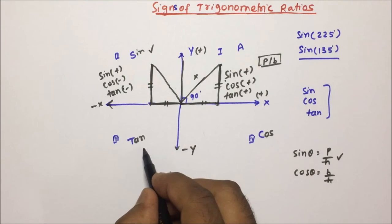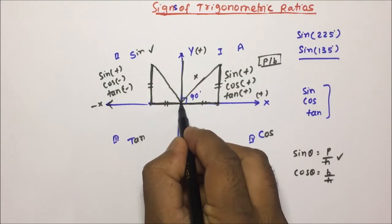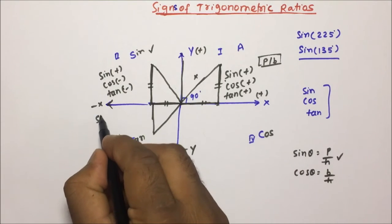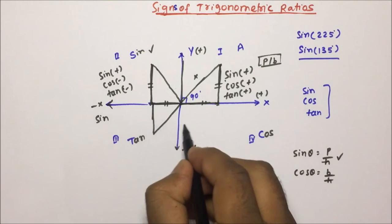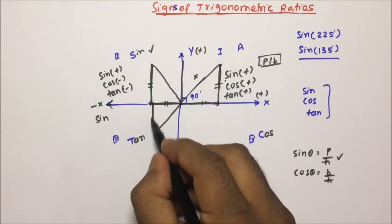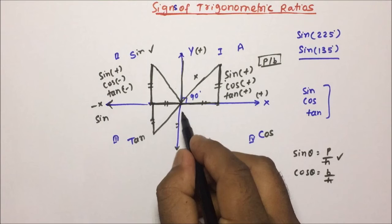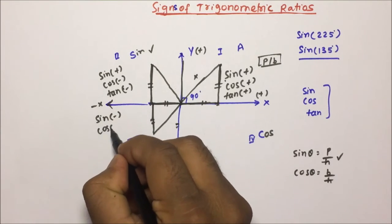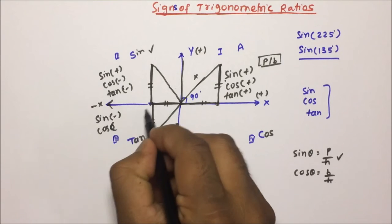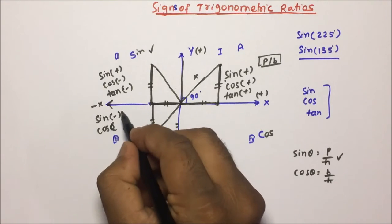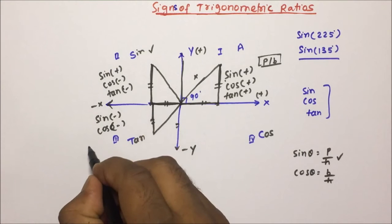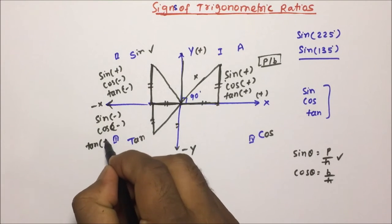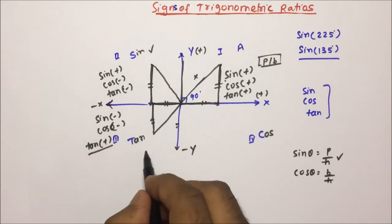In the third quadrant, make a triangle again. Sine — the perpendicular is along the negative y-axis, so sine is minus. Cos — the base is along the negative x-axis, so cos is minus. Tan equals sine by cos, so minus divided by minus will be plus. Therefore, tan is positive in the third quadrant.